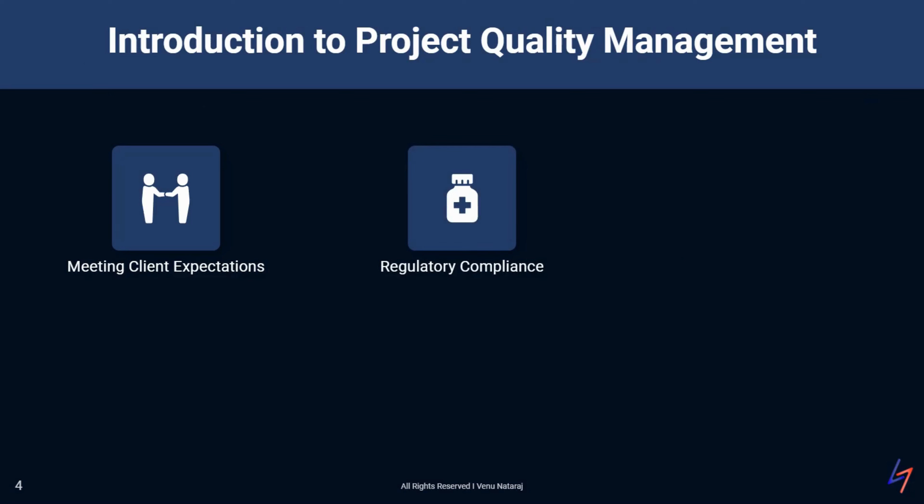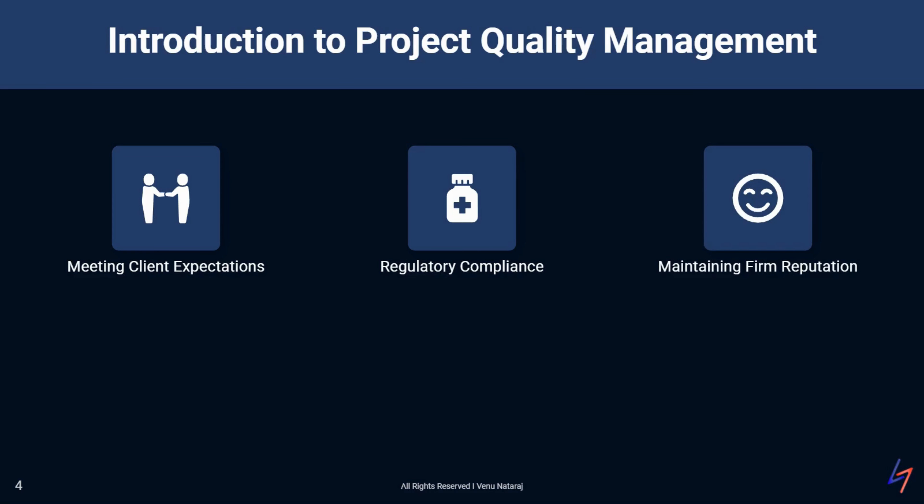Secondly, quality management ensures regulatory compliance. The construction industry is heavily regulated with numerous building codes, safety standards and environmental regulations. A robust quality management system helps ensure that our projects comply with all relevant regulations, avoiding legal issues and potential penalties. Third, it maintains the reputation of the construction firm. In an industry where reputation is everything, consistently delivering high-quality projects is crucial for long-term success. Quality management helps build and maintain a positive reputation in the market.